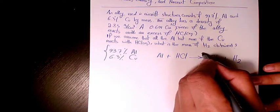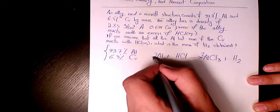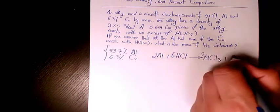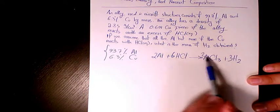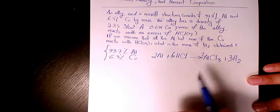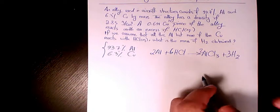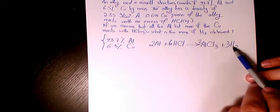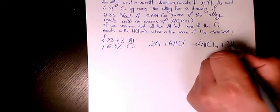So let's have two in here, two, six, and three. Now it's balanced. We have two aluminum, six hydrogen, and six chlorine. Now I need to know, it says how many mass of hydrogen is produced.